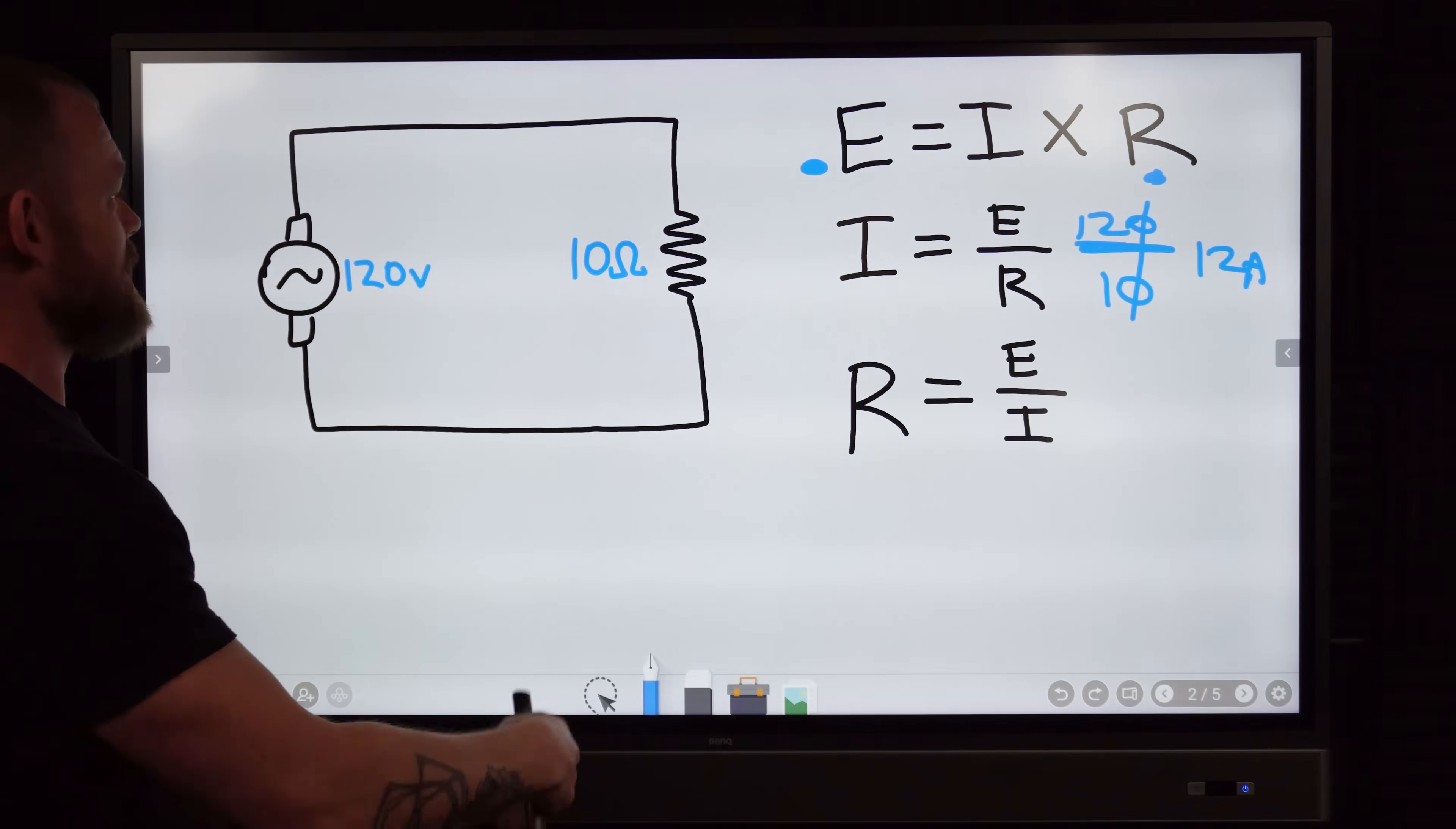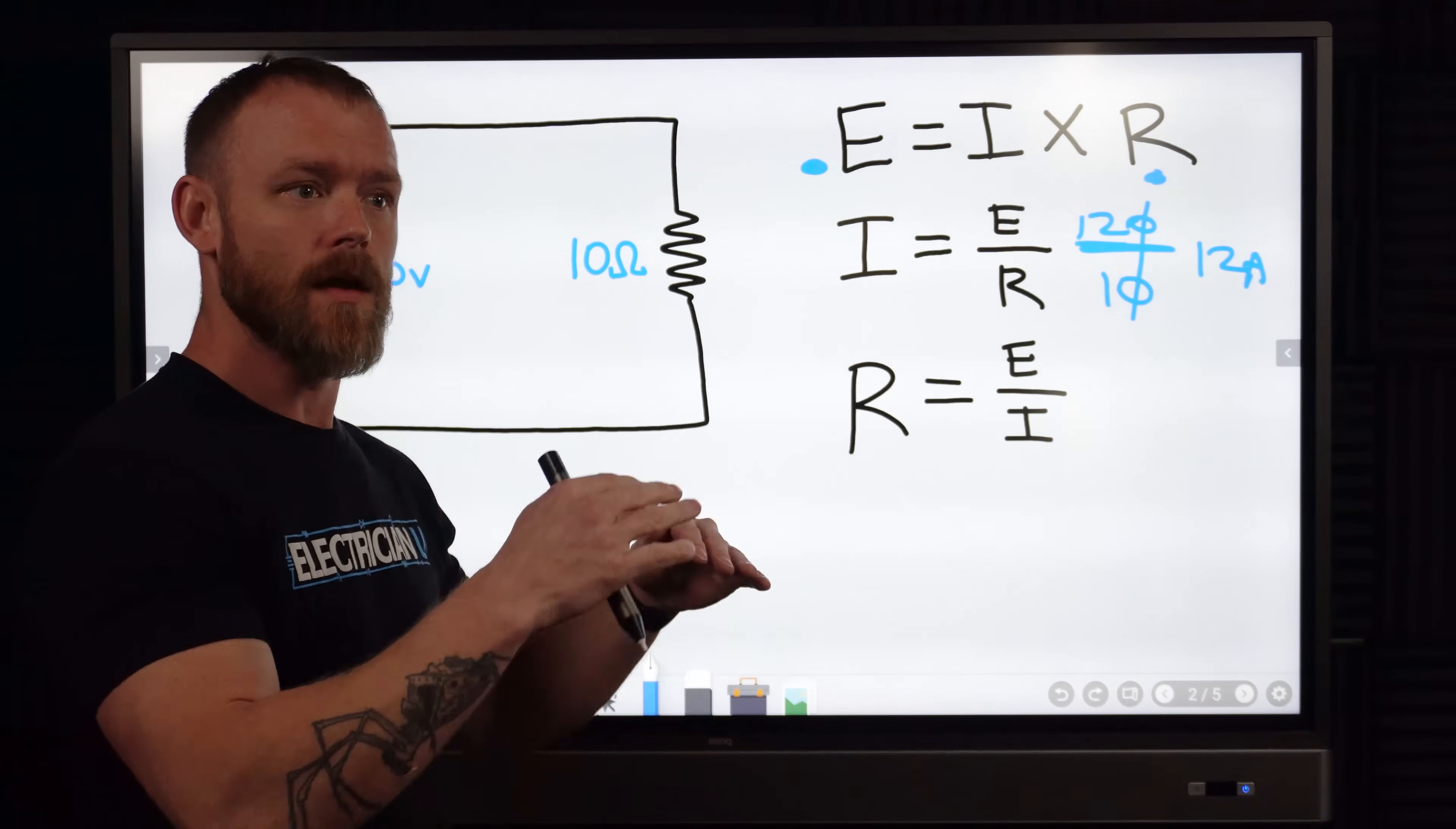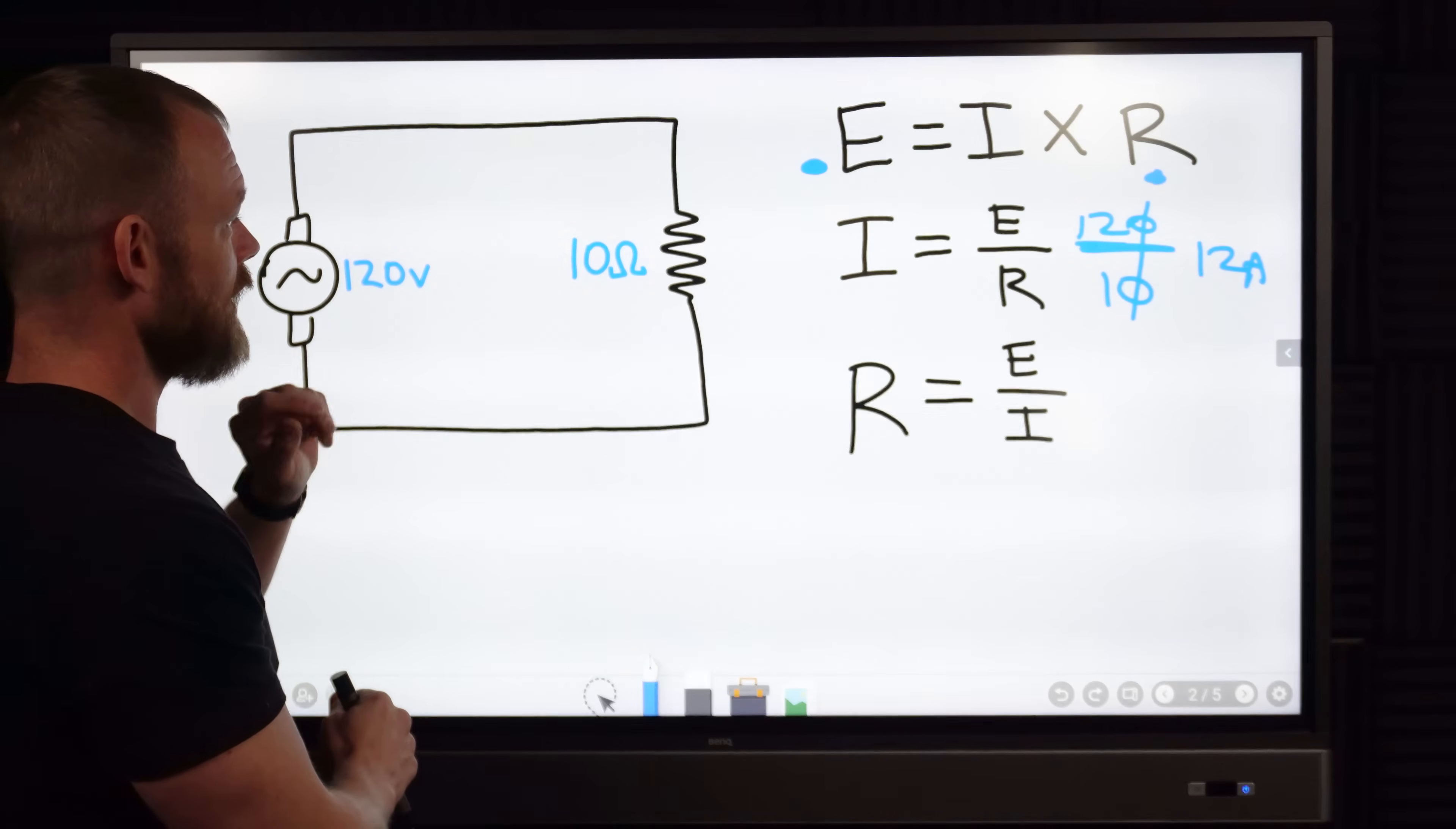So what does that tell us about the proportionality? It doesn't really, because we need to do another example to see by changing one of the values if anything changes.